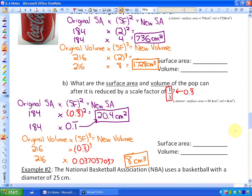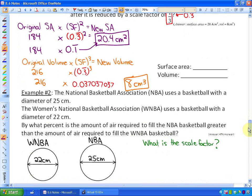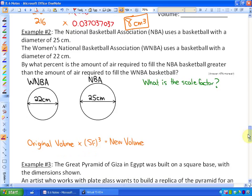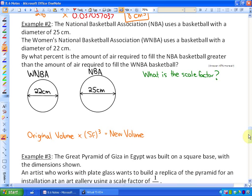The next question, we'll just look at one more in this particular lesson, says this. The National Basketball Association, the NBA, uses a basketball with a diameter of 25 cm. So here's the National NBA diameter basketball. The Women's National Basketball Association, the WNBA, uses a basketball with a diameter of 22 cm. So it's a smaller ball. By what percent is the amount of air required to fill the NBA basketball greater than the amount of air required to fill the WNBA basketball? So in other words,